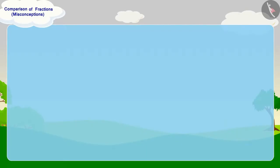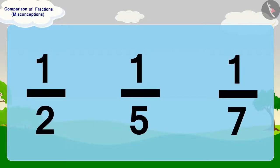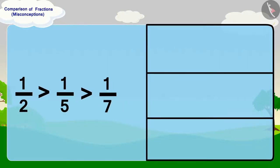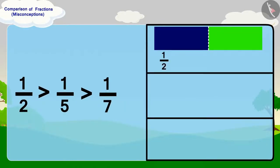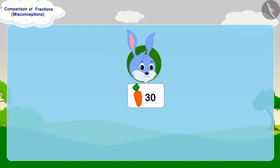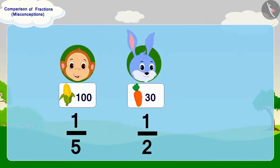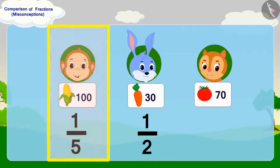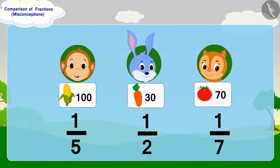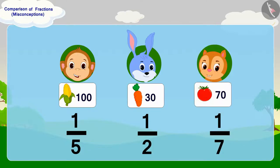If we only compare fractions, we will find that Banni is right because half is greater than one-fifth and one-seventh. But here, these are different items whose quantity is also different, like half of 30 carrots, one-fifth of 100 corns and one-seventh of 70 tomatoes.